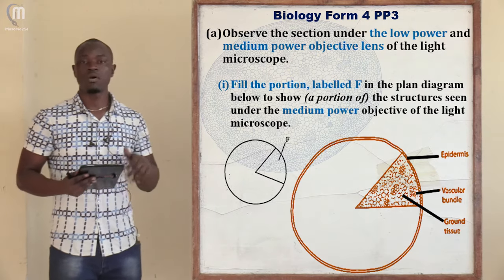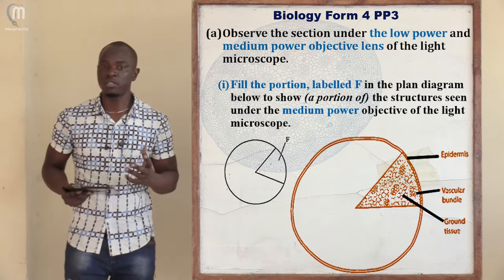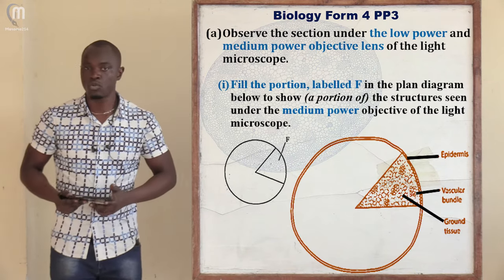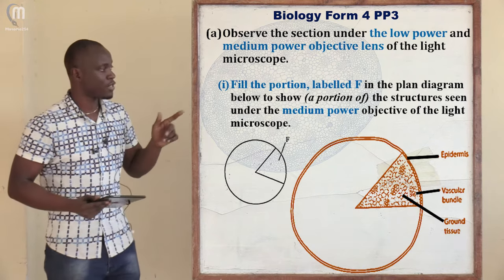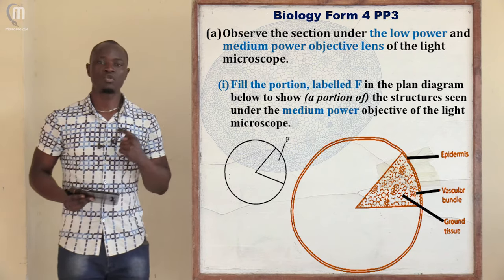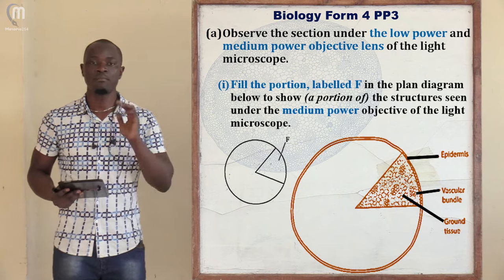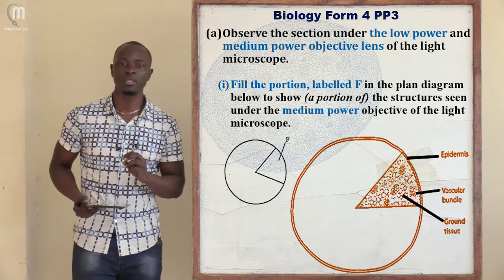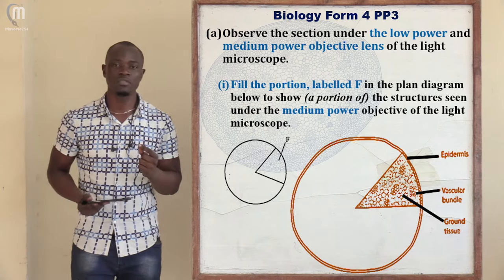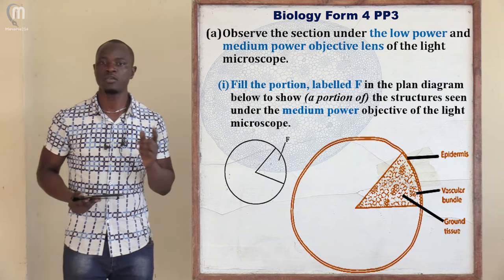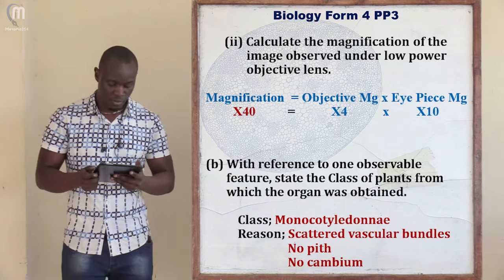After drawing part F from what you observed using the eyepiece lens, you must label all the parts — because in Biology, if you draw without labeling your diagrams, everything is wrong. All diagrams in Biology must be labeled. Students were required to label parts from the epidermis, ground tissues, and vascular bundles to get everything correct. Also remember the rules for drawing in Biology: always use a pencil, and use a dash or line — never arrows — when labeling.